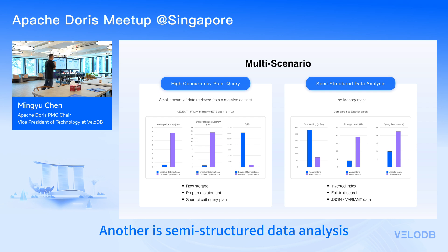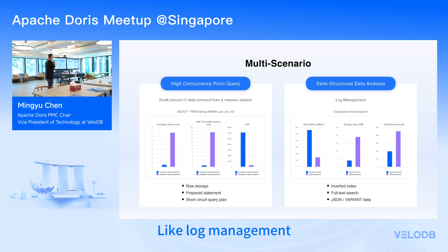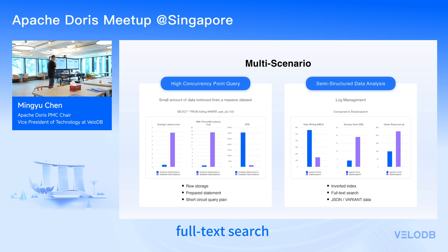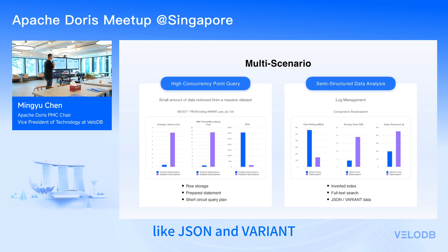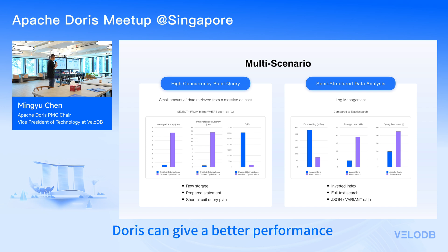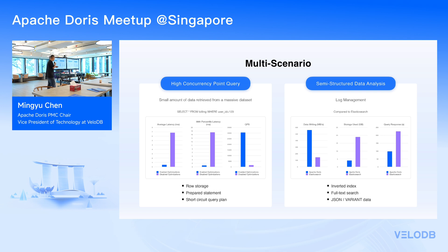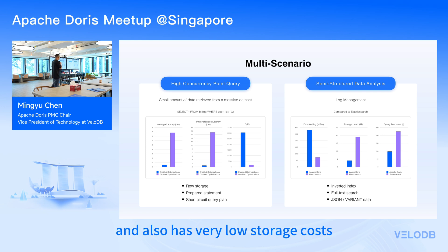Another scenario is semi-structured data analysis, an area where Doris excels — for example, log management. Doris supports inverted indexes, full-text search, and flexible semi-structured data types like JSON and Variant. Compared to Elasticsearch, Doris can deliver better write performance, query performance, and also has very low storage cost.